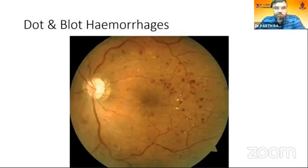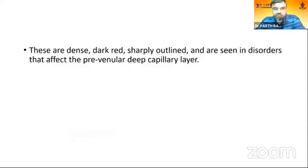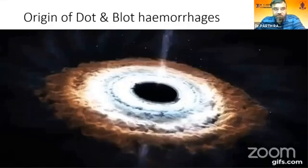These are the dot and blot hemorrhages as we have seen in our books and in patients. They are dense, dark red, sharply outlined, and are seen in disorders that affect the pre-venular deep capillary layer.